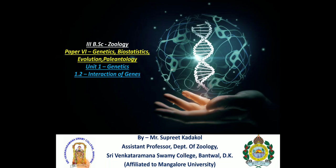Hello everyone. In this session we are going to discuss about the second subunit, that is interaction of genes, which comes under paper 6 that is genetics, biostatistics, evolution and paleontology. We have already discussed about the Mendelian principles in the first subunit. These interactions of genes are nothing but the continuation of the Mendelian principles. We will see what type of examples it consists of.